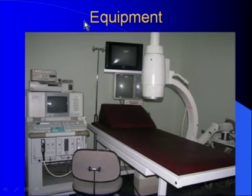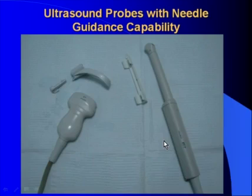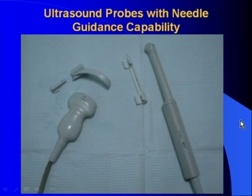Here you see the equipment we use for ultrasound and combined ultrasound fluoroscopy guidance: an ultrasound machine, a very small C-arm unit with an operation table that is radiolucent and can move during the procedure from the ultrasound to the x-ray area. Ultrasound probes with needle guide capabilities include a convex probe for percutaneous approach with a needle guide accepting different diameter needles, and an endo-cavity probe with needle guide accepting an 18-gauge needle.